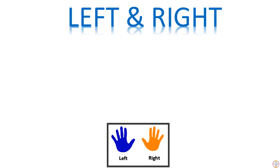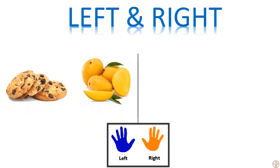Now I'll be sharing a set of pictures and you have to guess which one is at the left and which one is at the right. In the given set of pictures we have cookies and mangoes. You guess which one is at the left and which one is at the right. Just place your palms in front of the screen and find out which one is at the left. Yes, the cookies are at the left and the mangoes are on the right.